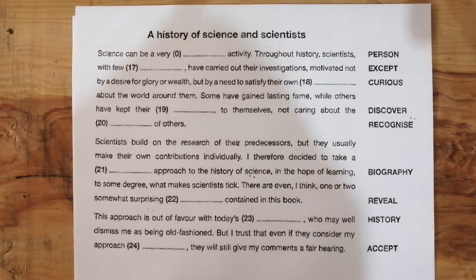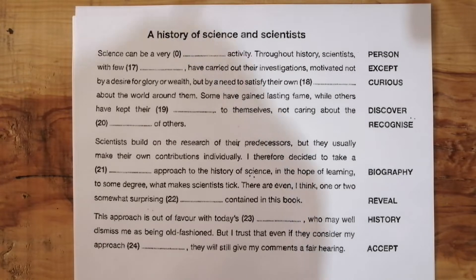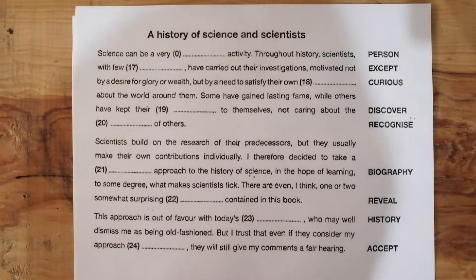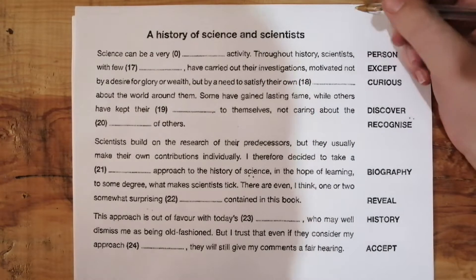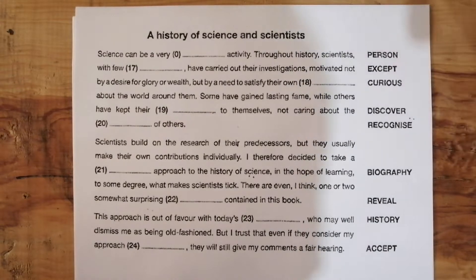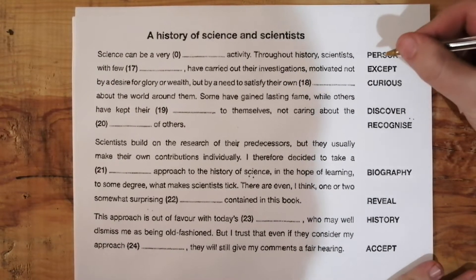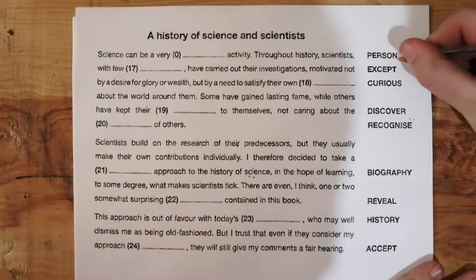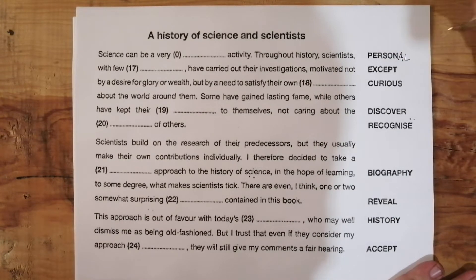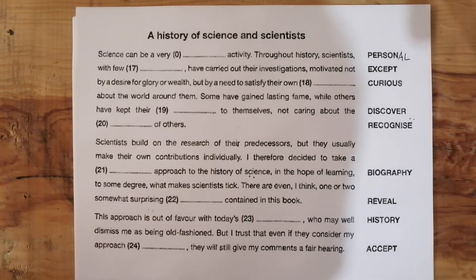Okay guys, so here's another CAE style Part 3 of the Reading and Use of English paper. The example is: science can be a very person, and we have to change it to 'personal'. Obviously the example is always very easy. Press pause now and try to answer the rest of the questions.